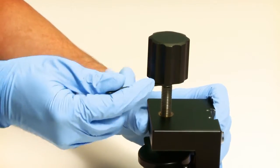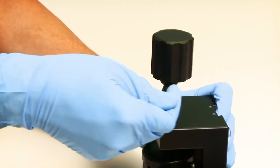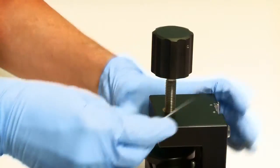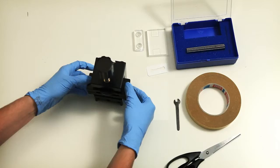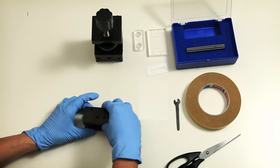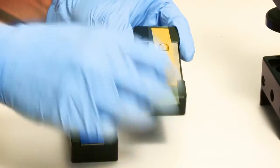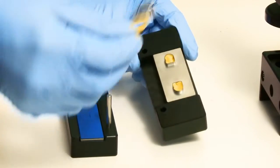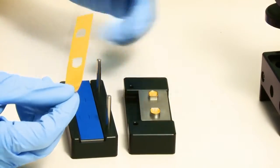Now your sample is punched through. Release the compression and disassemble the punching tool. Now you have two holes in your sample, the two openings for the electrolyte feed.